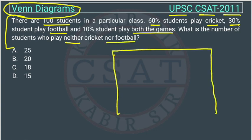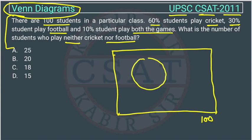We will make a Venn diagram for cricket. This box will represent the total number of students, which is 100. This circle represents who are playing cricket. How many are playing cricket? 60%. So 60% of 100 will be 60 only.